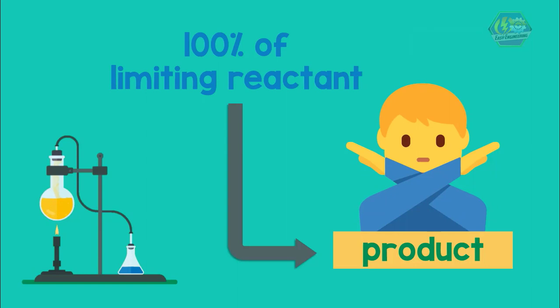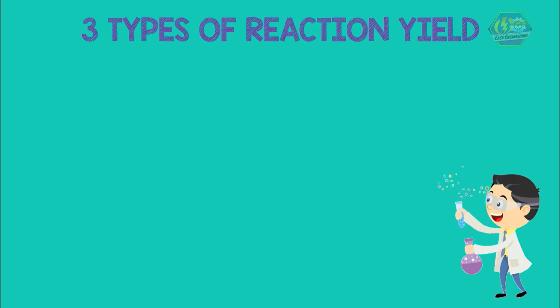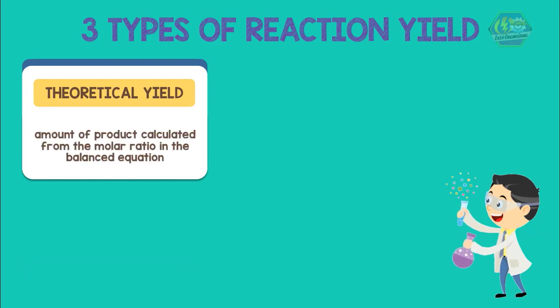Chemists recognize three types of reaction yield. Number one: theoretical yield. This is the amount of product calculated from the molar ratio in the balanced equation.